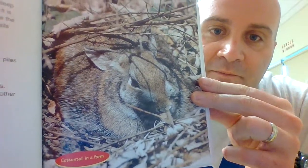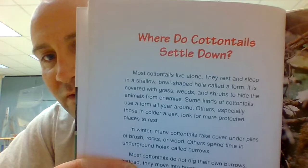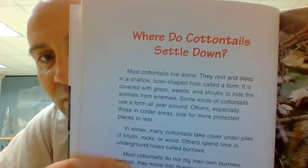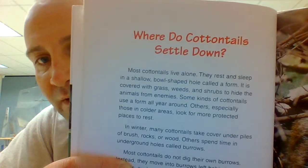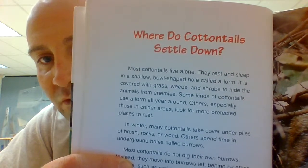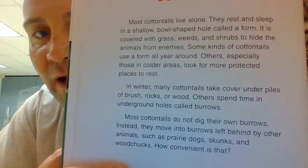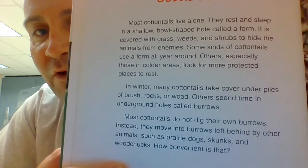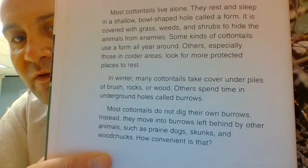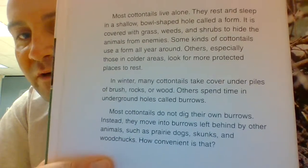Cottontail in a form. Where do cottontails settle down? Most cottontails live alone. They rest and sleep in a shallow, bowl-shaped hole called the form. It is covered with grass, weeds, and shrubs to hide the animals from their enemies. Some cottontails use a form all year round; others, especially those in colder areas, look for more protected places to rest. In winter, many cottontails take cover under piles of brush, rocks, or wood. Others spend time in underground holes called burrows. Most cottontails do not dig their own burrows.